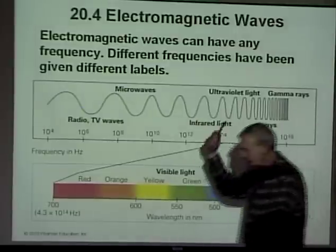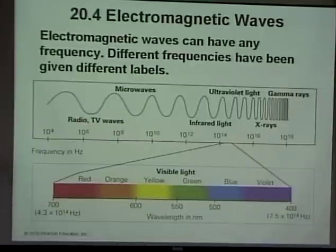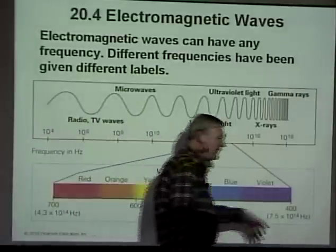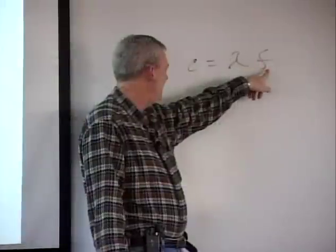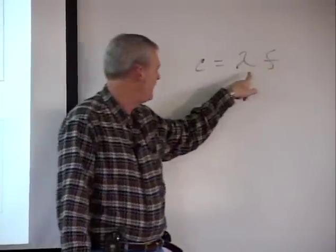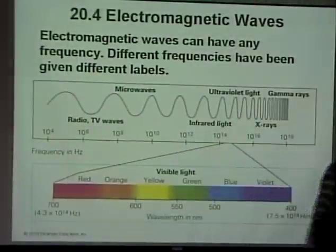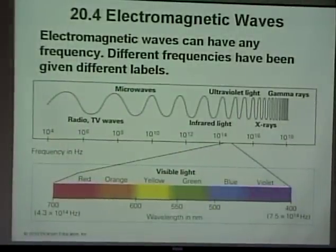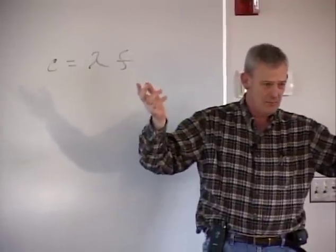This is where it gets cool, because the only math so far is c equals wavelength times frequency. As frequency increases, wavelength gets much, much shorter. Microwaves — this is also how a microwave oven works.